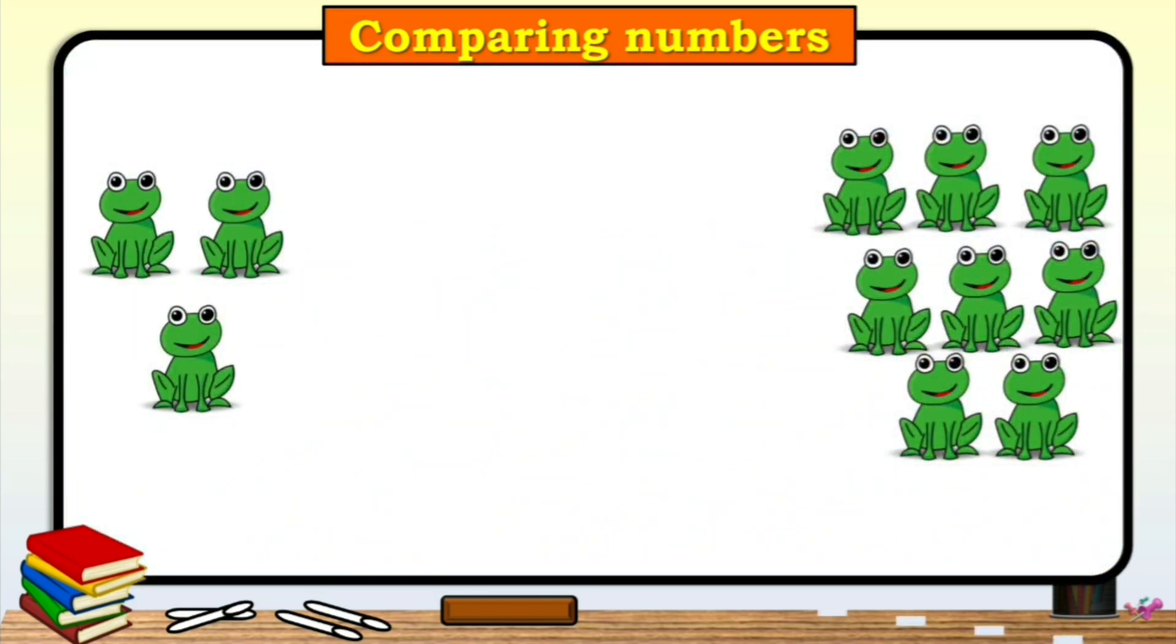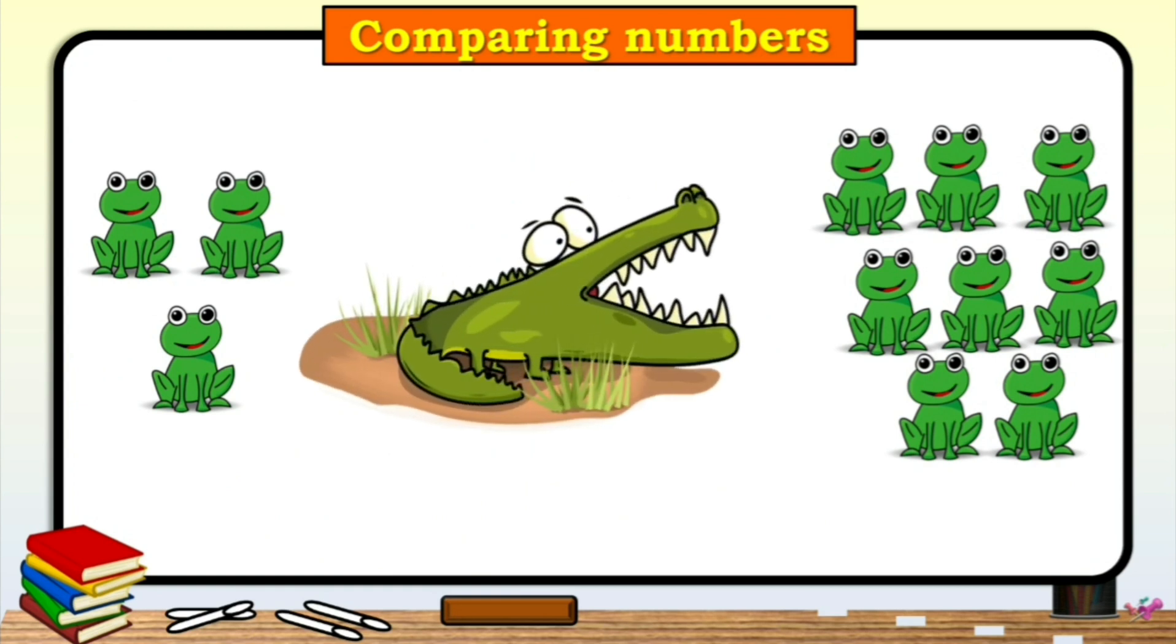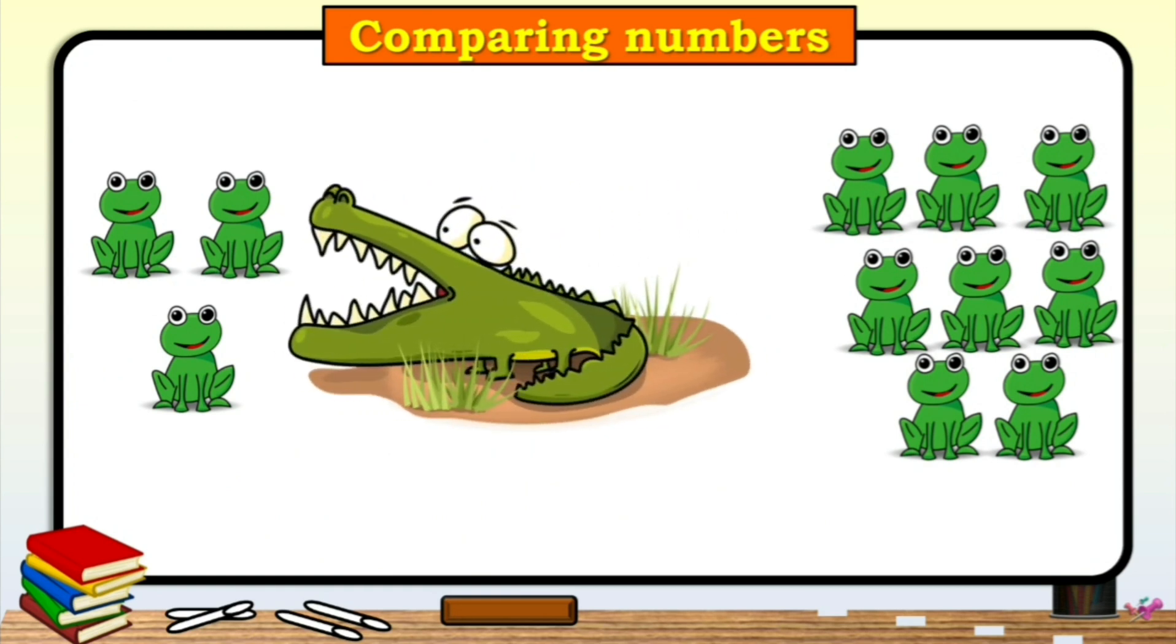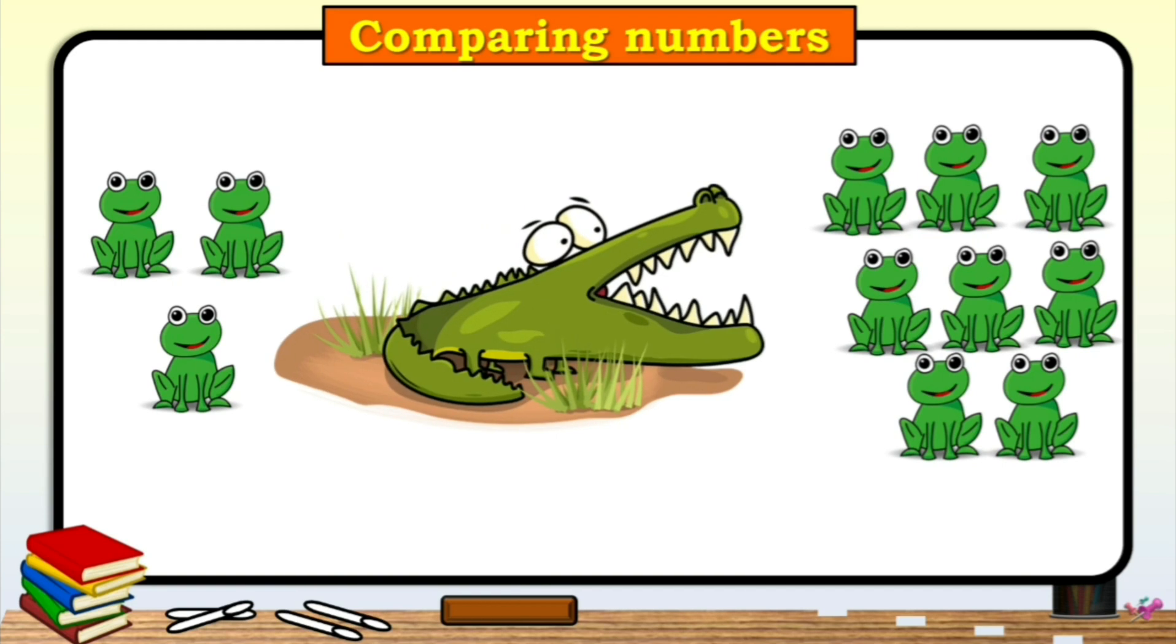Now, here alligator wants to eat frogs. So, it is thinking, which group of frogs should I eat? This one or this one? This group has eight frogs as eight frogs are more than three frogs, alligator said.